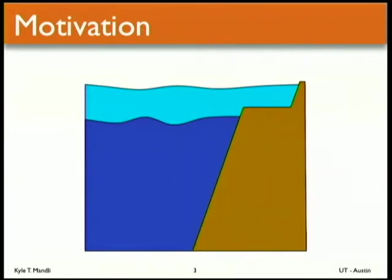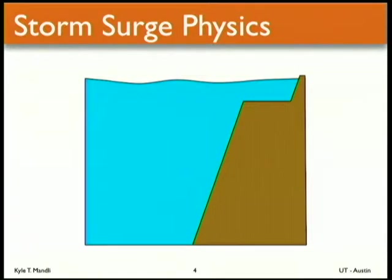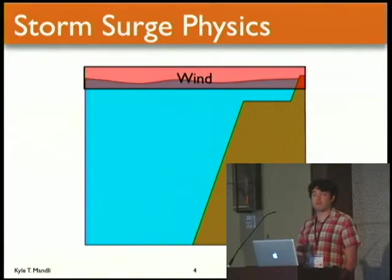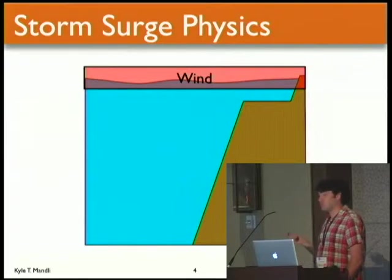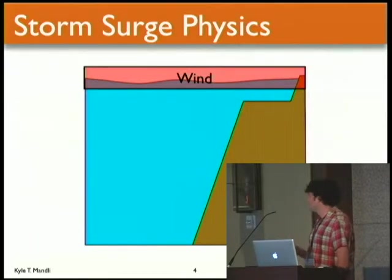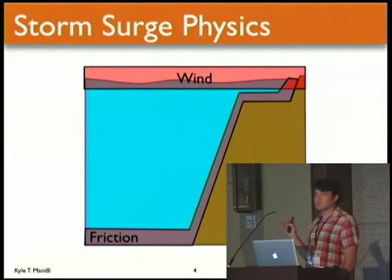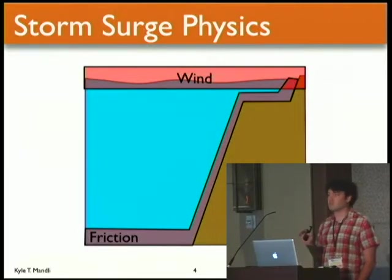It's a fairly straightforward idea — two layers with an interface between them, different in that they have two different densities. The main reason we started looking into this is our desire to do storm surge simulations. If you think about storm surge, you have the wind as the primary forcing on the ocean at the top, there's a boundary layer there, and there's also friction. Those two actually balance out, and that's what gives you most of your surge.